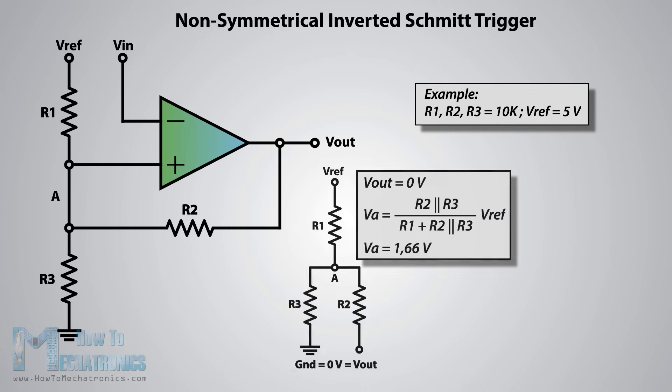In the first case when the output is 0 volts, our circuit will look like this, a simple voltage divider, and the value of the VA will be 1.66 volts. This means that the VIN input needs to decline below that value in order for the output to switch on to 5 volts.